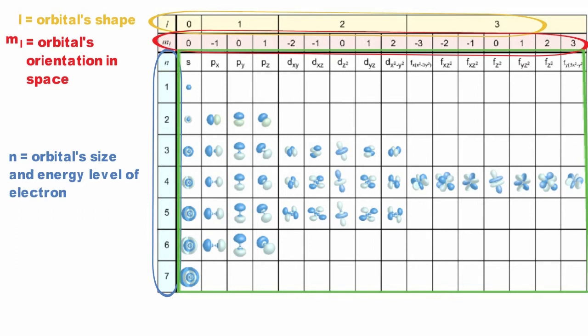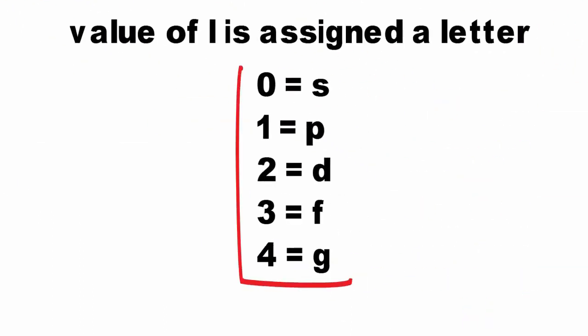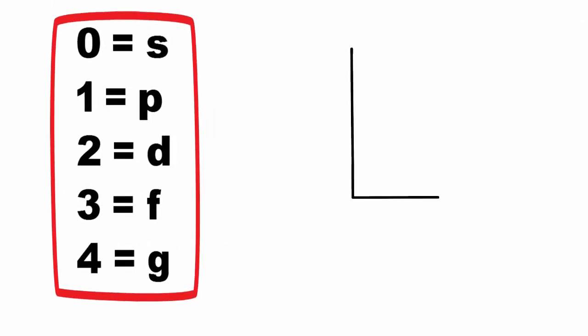Now that we have an understanding of quantum numbers, we need to look at some orbital shapes. Remember that the shapes of orbitals correspond to the angular momentum number L. Let's look at some of the shapes of the orbitals defined by L and the orbital's orientation in space described by m sub-L. Orbitals are oriented in 3D space defined using an X, Y, and Z axis.